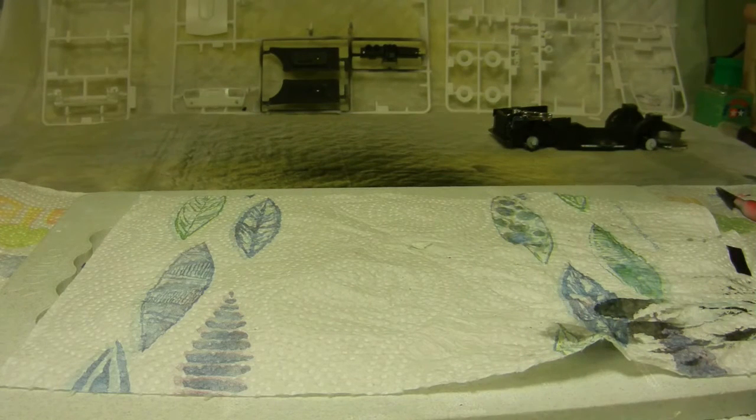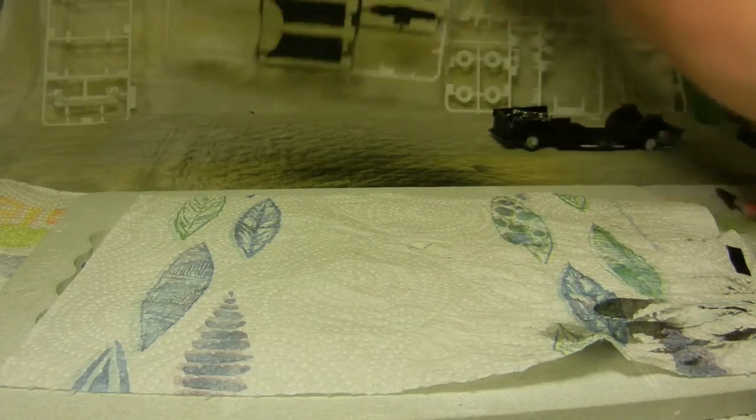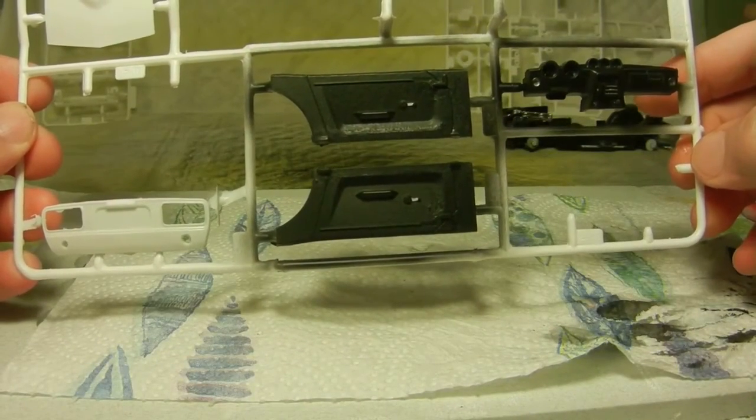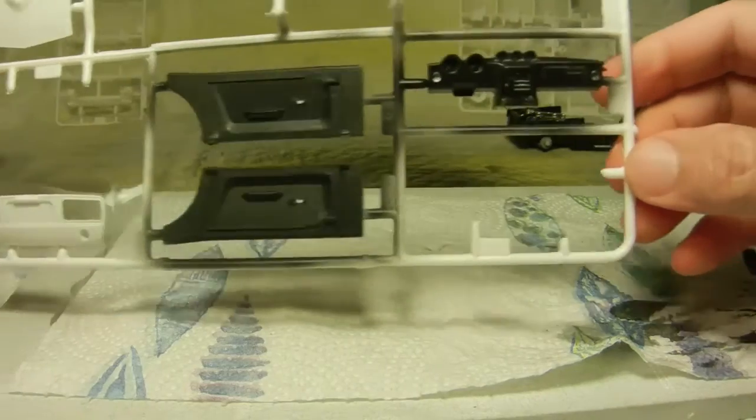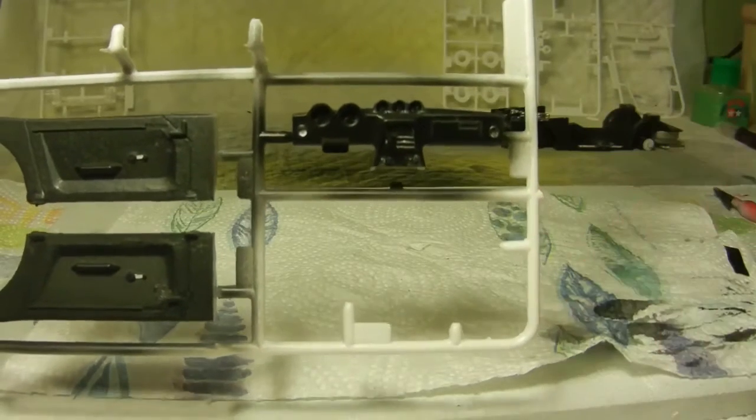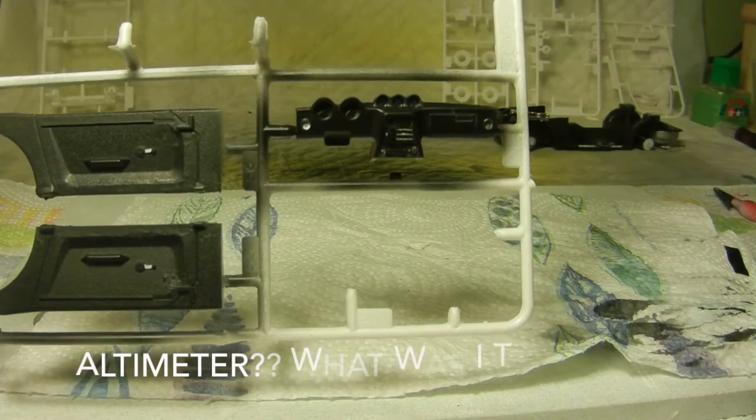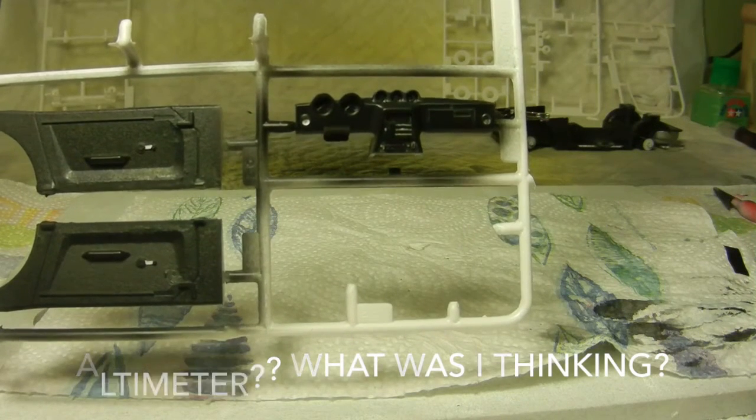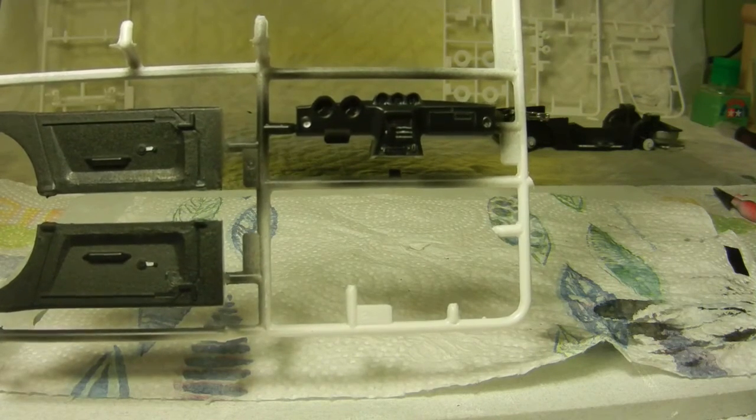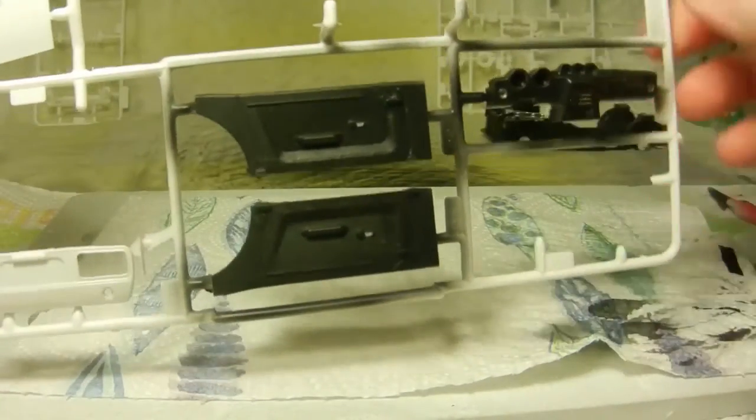As far as the door panels, we went ahead and airbrushed that on with some satin black, and the dashboard itself, we painted the main dashboard satin black and then the actual speedometer or odometer and the rest of the console we painted gloss black. That is done and decals will follow afterwards once I get this all sealed with the Future.